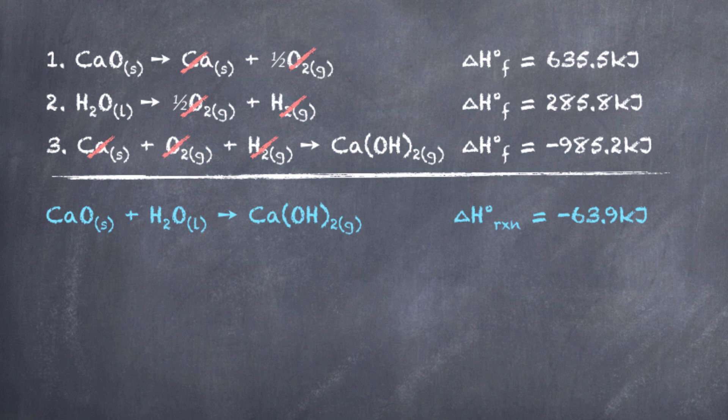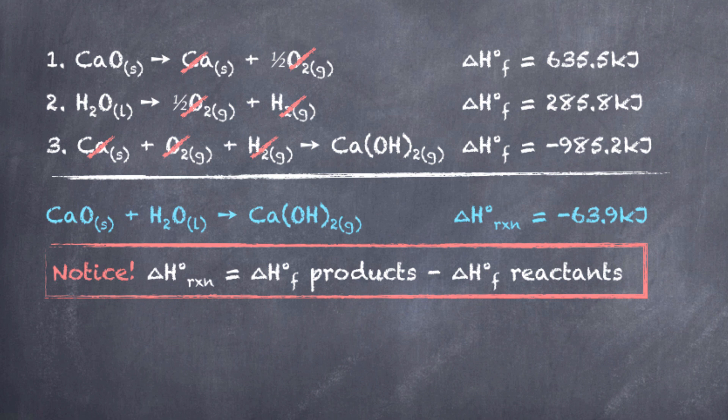But if we analyze this a little further, what we're going to notice is that if we take all of the heats of formations of the products and subtract that from the heats of formations of the reactants, that's going to allow us to establish the enthalpy change for this particular target equation. And we can use this information to come up with a representation or an equation to help us figure out the enthalpy change for a reaction if we know the heats of formation of each of the substances involved.